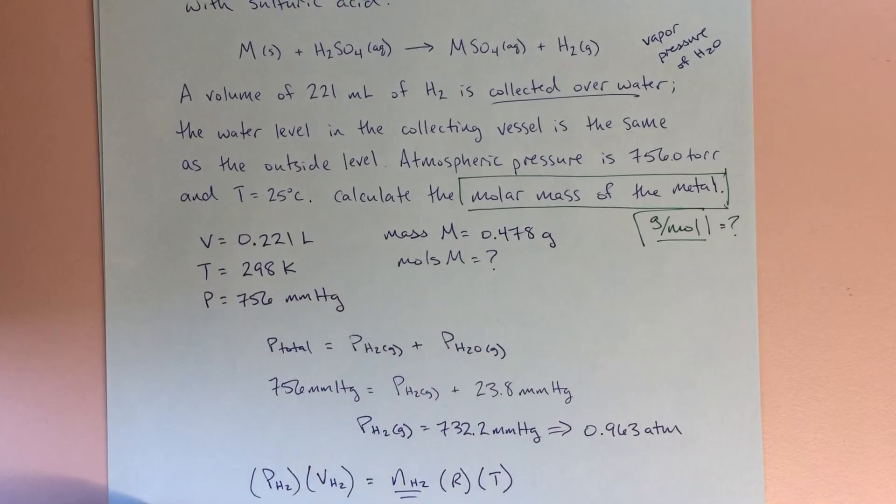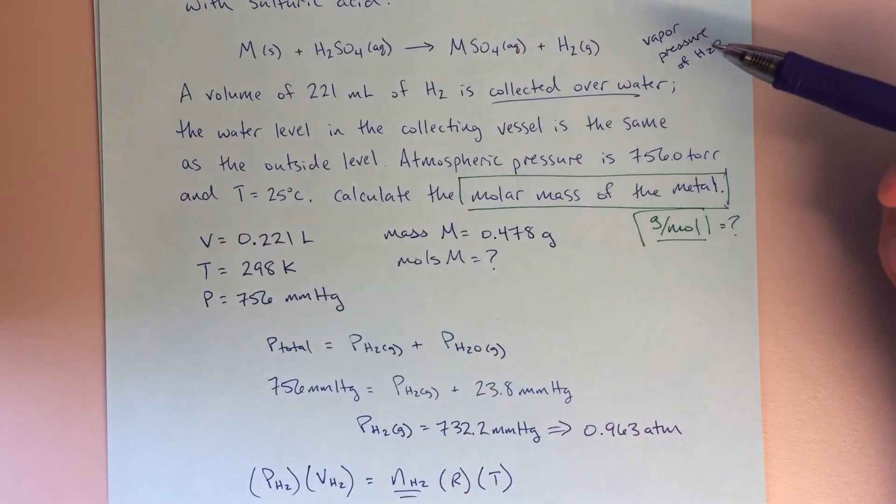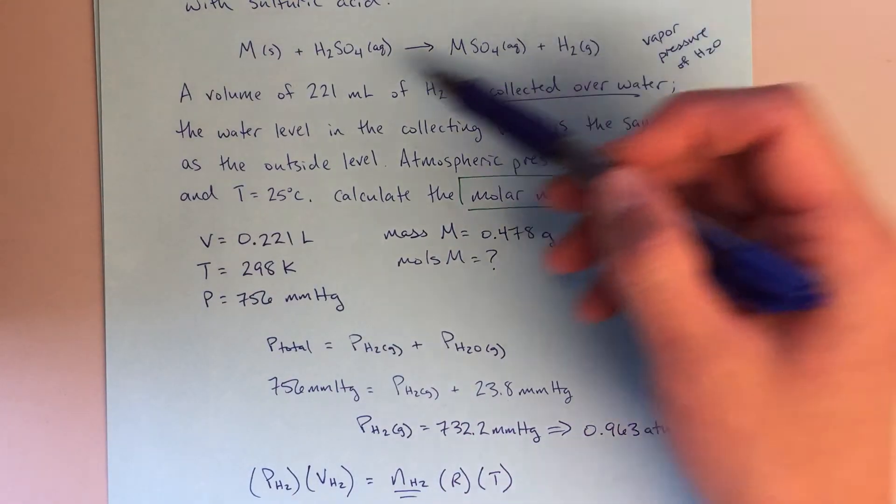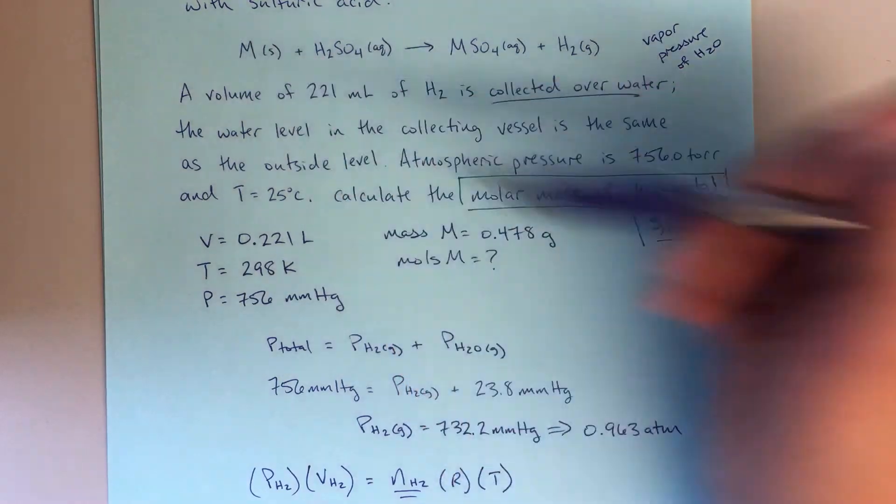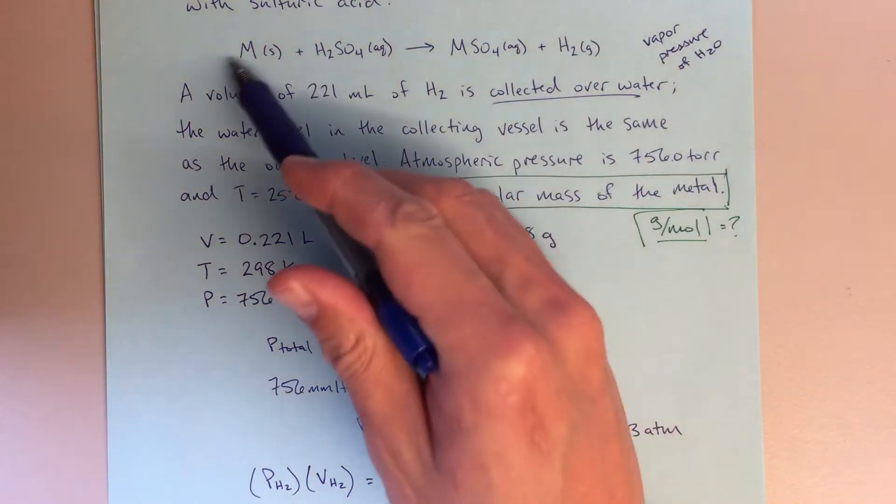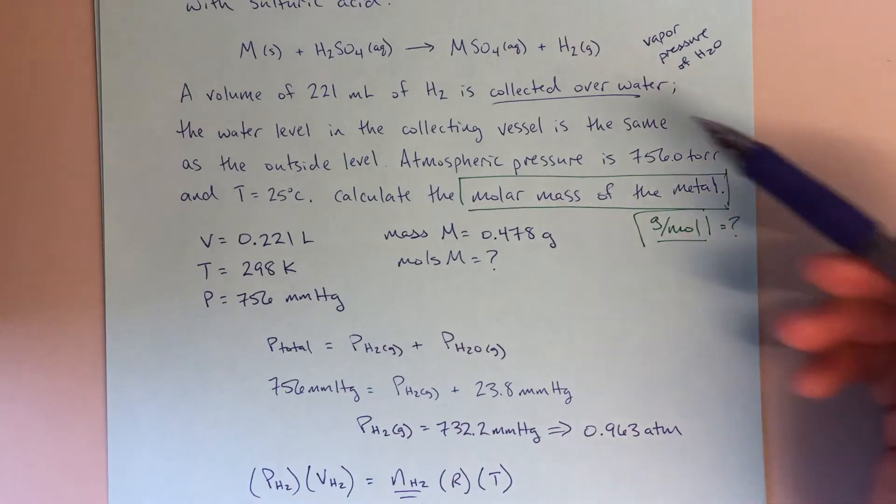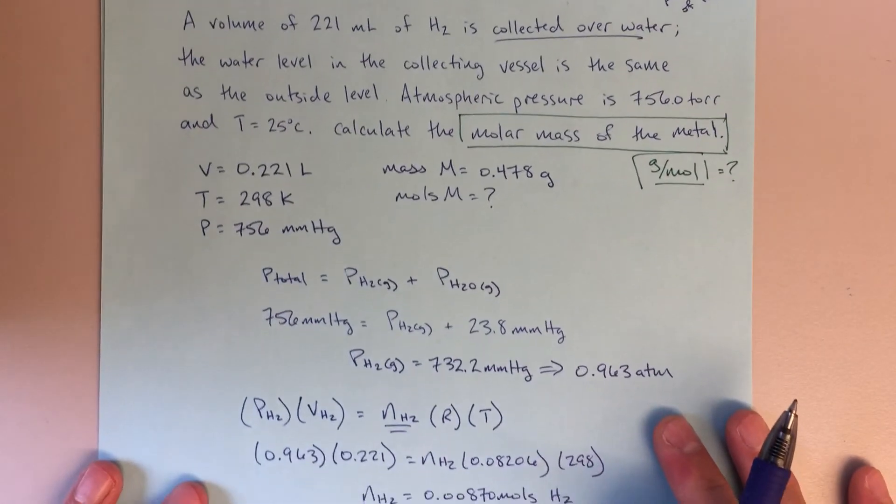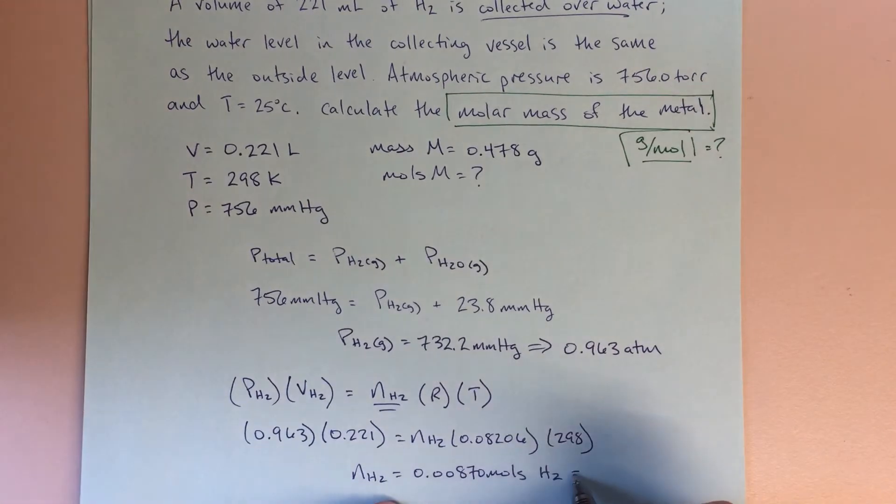And going back up to here, up to the top, I can say, well, if I have this number of moles of H2, I know how many moles of M I had in my reaction, right? It's going to be a one-to-one ratio. So it's pretty easy for me to say, well, if it's a one-to-one ratio using the stoichiometry, then my number of moles of H2 equals my moles of M.